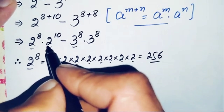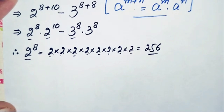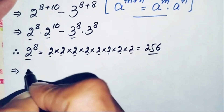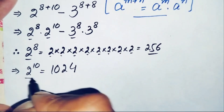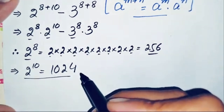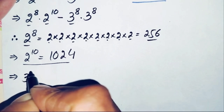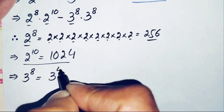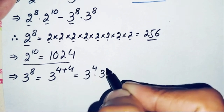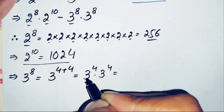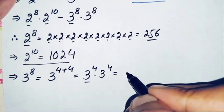Next, the value of 2 raised to power 10 is a well-known number equal to 1024. For 3 raised to power 8, we write the power 8 as 4 plus 4, giving us 3 raised to power 4 times 3 raised to power 4. Since 3 times 3 is 9, 9 times 3 is 27, and 27 times 3 is 81, so 3 raised to power 4 is 81.